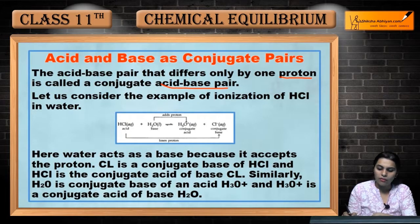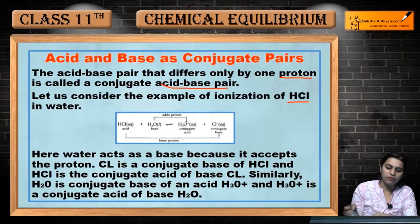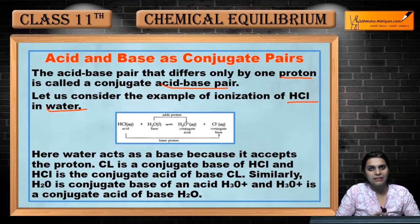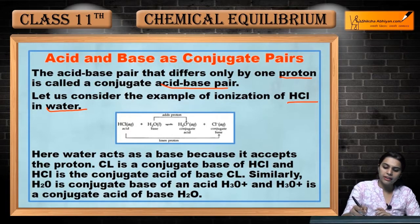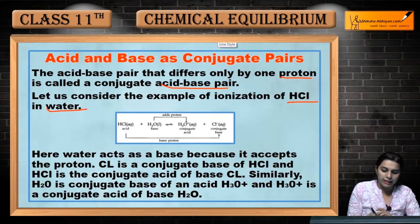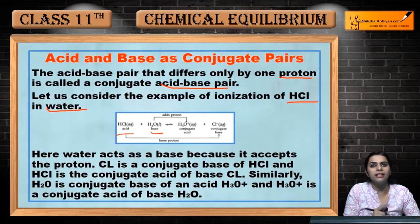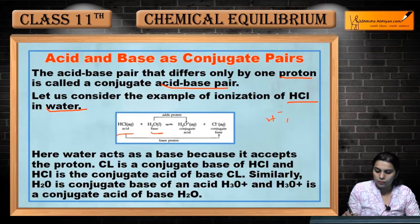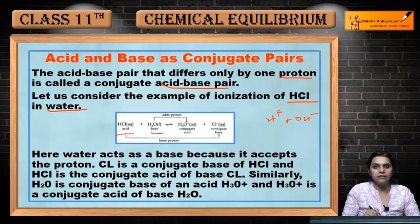Let us consider the example of ionization of HCl in water. HCl is a strong acid. When you dissolve it in water, water will act as a base. I have told you that water is amphoteric — it can act as both acid and base. Now H2O will give H-positive and OH-negative.